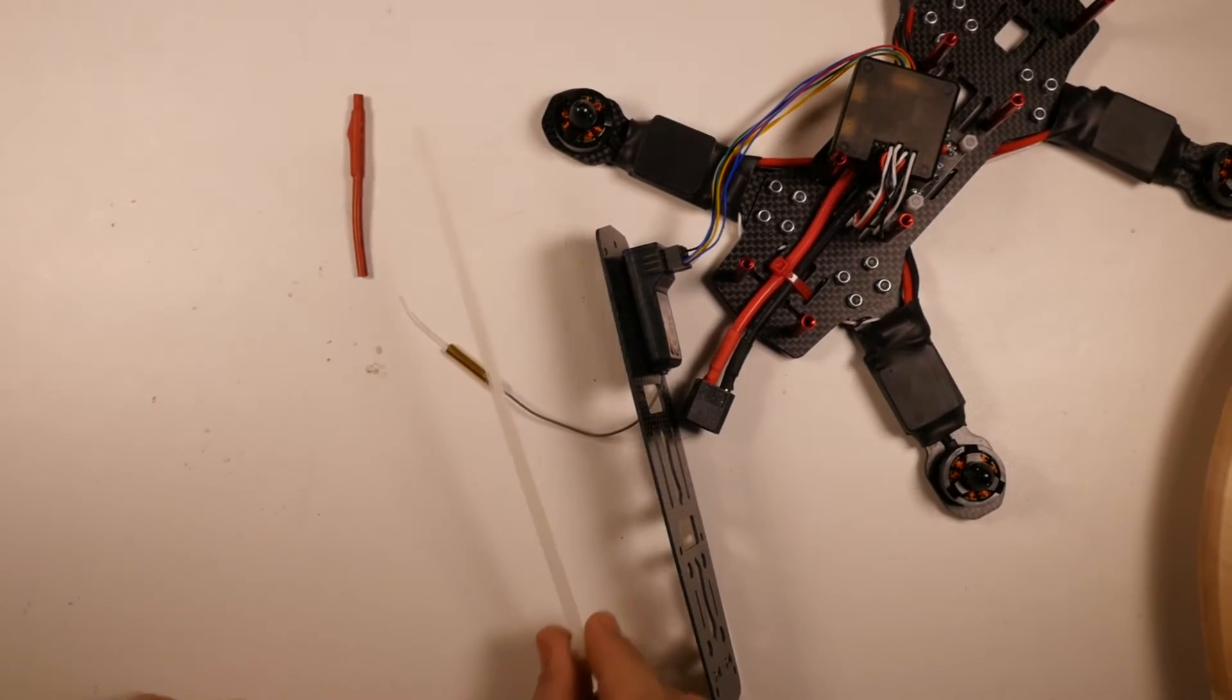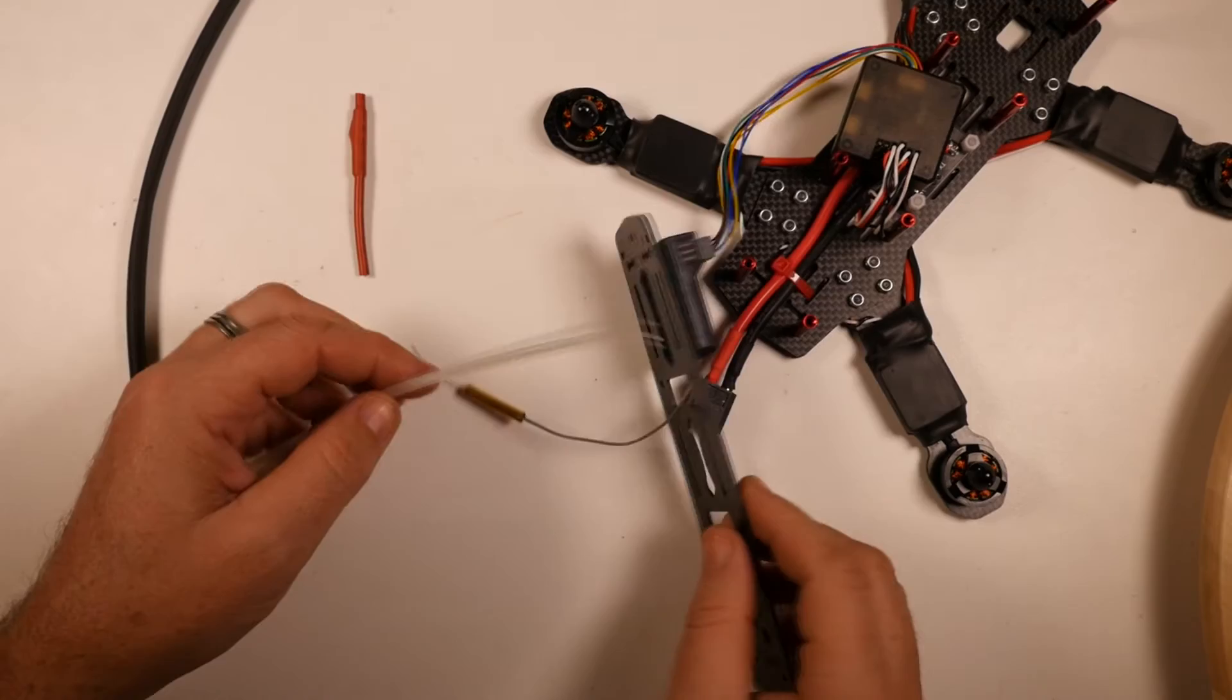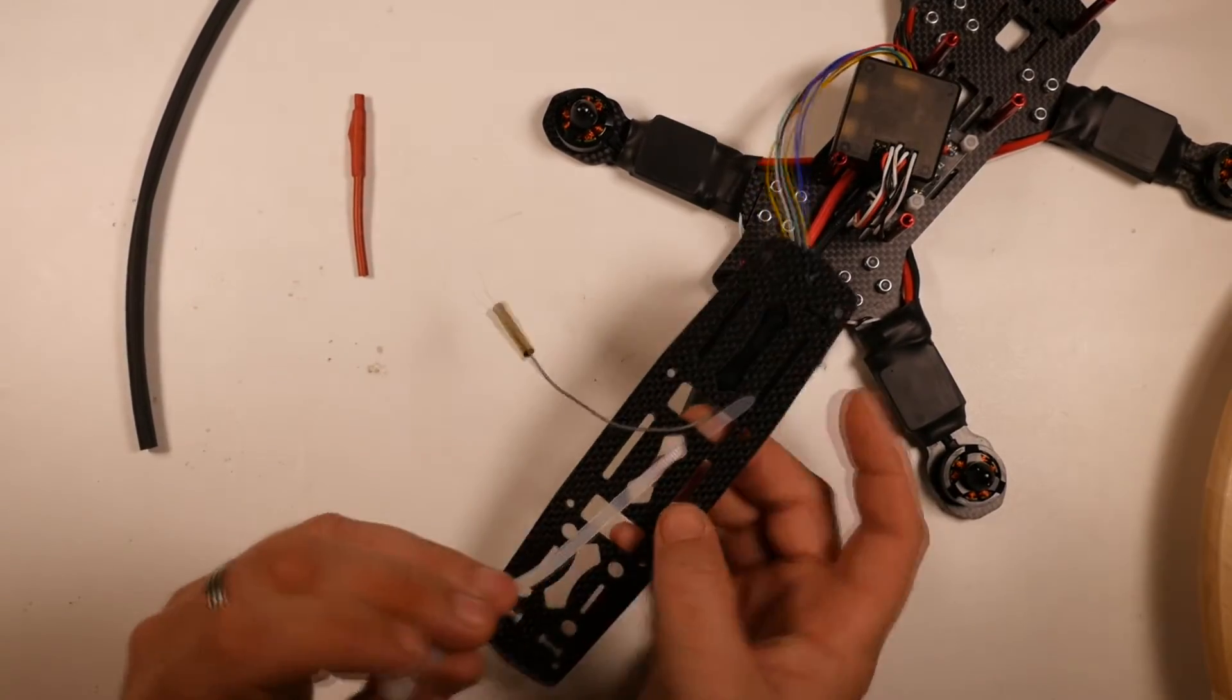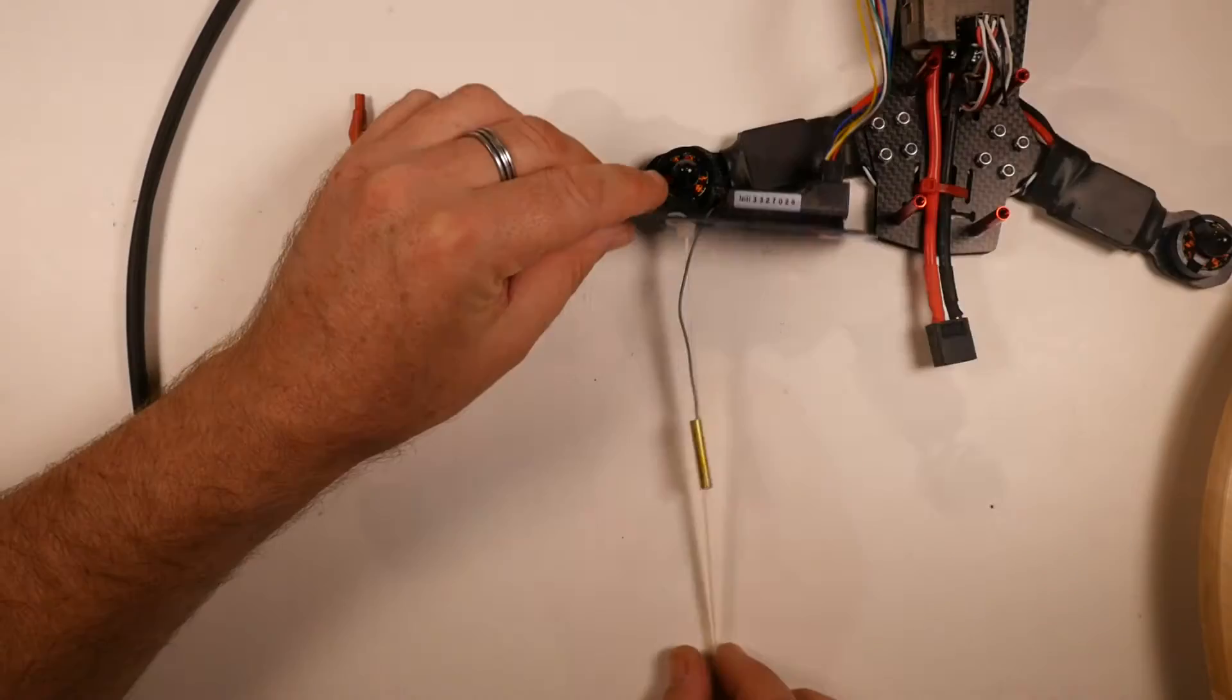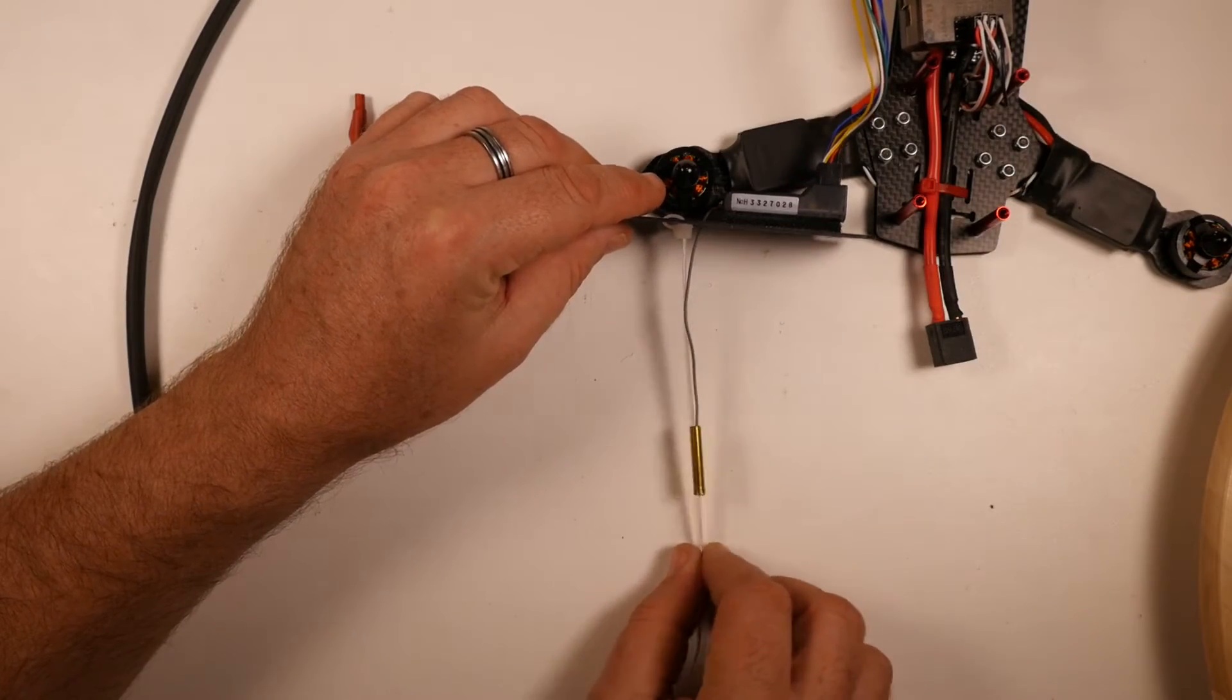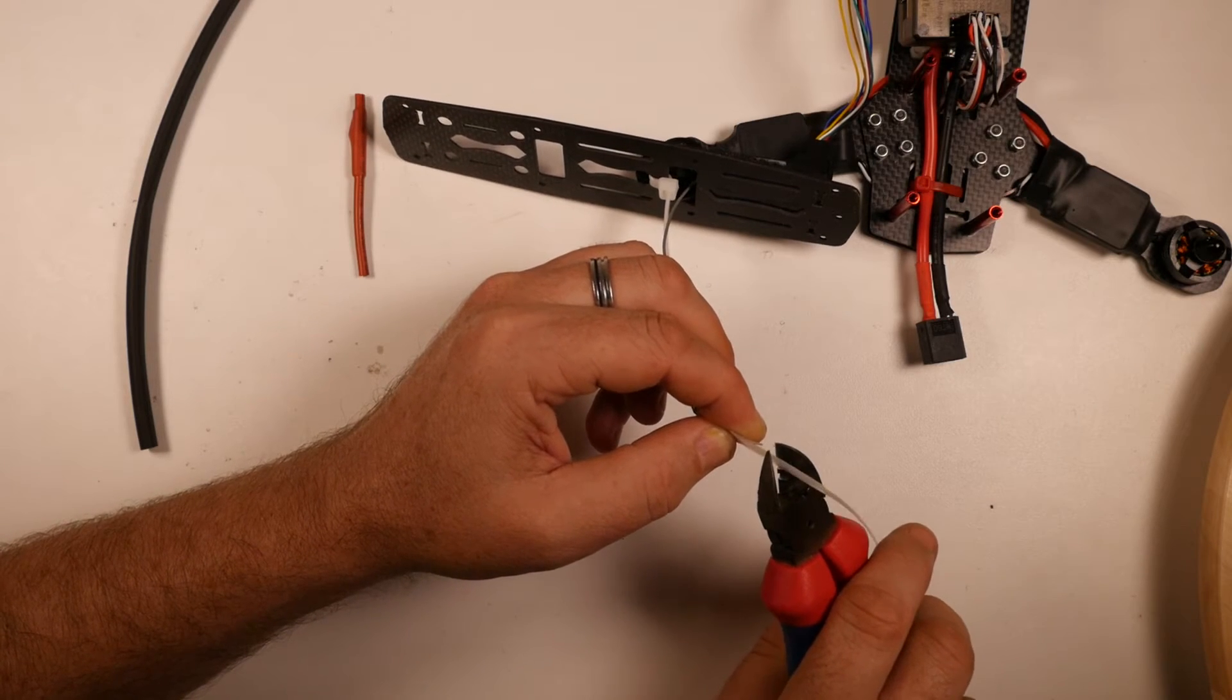So I've just got myself a cable tie here and a piece of heat shrink. All I want to do is just wrap the cable tie around the frame here. I basically want the cable tie to stick up, and then if we have a look at the length here, I want to just cut the cable tie off just above the top of the antenna.